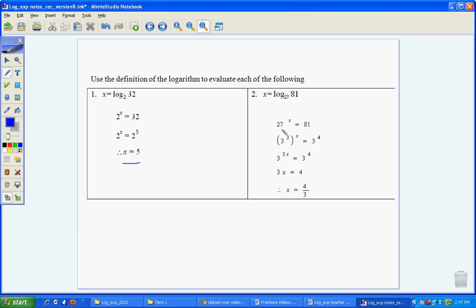81 can be written as 27 to the power of x here would be equal to 81. And we can change around to use our indice laws, and that's what we're doing, just playing around with our indice laws to show that it would be equal to 4 on 3.